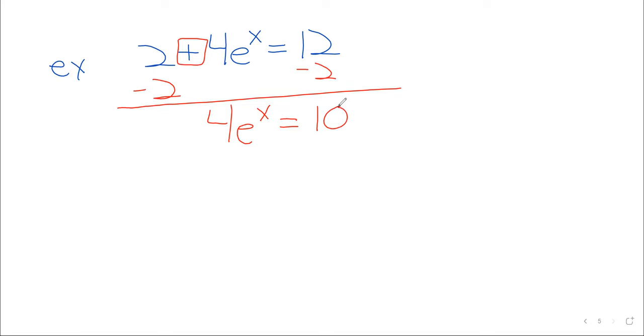And then we need to get rid of the 4, and to undo multiplication, you need division.